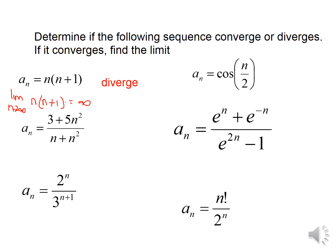In the next example, the limit as n approaches infinity of cosine(n) over 2: remember n is a positive integer, so we'd evaluate cosine at values like 100/2, 501/2, and so on. The values just bounce back and forth between negative one and one, so the limit does not exist. Therefore the sequence diverges.